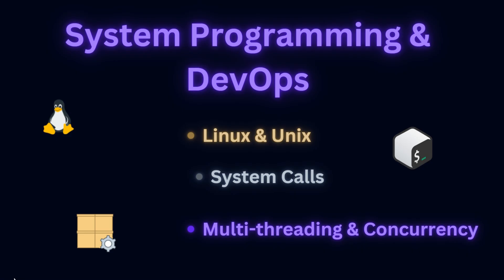The next stage is system programming and DevOps. You're building on your basic shell scripting and Linux knowledge. At this stage, you understand programming and problem solving, but real-world applications don't just run locally — they live in networked, automated, and secure environments. Go deep into Linux, understand Unix commands, learn system calls, process management, memory management, and master file system networking commands and permissions.